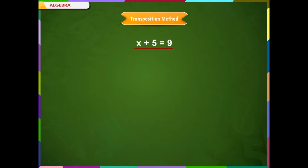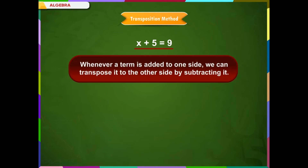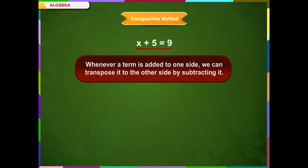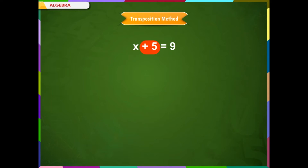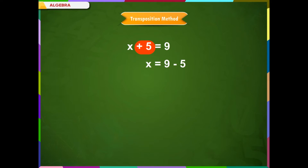Look at this equation. We need x on this side and get rid of this 5. This 5, as we can see, is added on this side. The first important point of this method is: whenever a term is added to one side, we can transpose it to the other side by subtracting it. In this equation, 5 is added, so we can write the equation as x equals 9 minus 5. This plus 5, which was on the left-hand side when transposed, gets subtracted on the right-hand side. These two equations are the same, written in different ways.